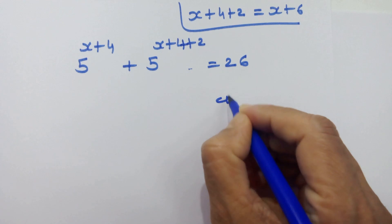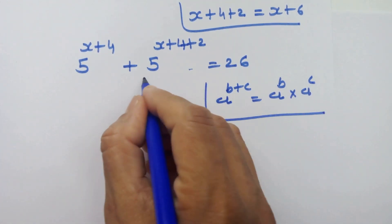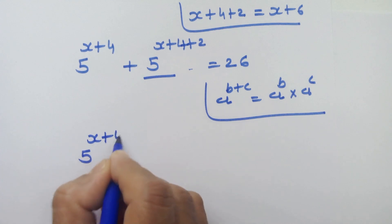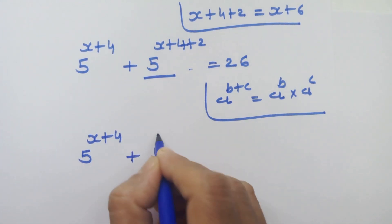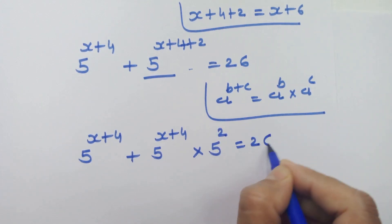Now if we have a raise to b plus c then we can write it as a raise to b into a raise to c. By using this rule on this part here we can write 5 raise to x plus 4 plus 5 raise to x plus 4 into 5 square is equal to 26.